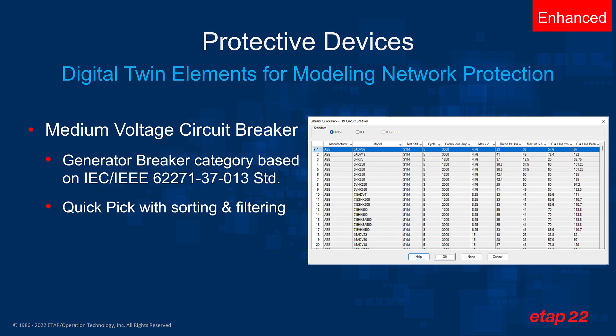The library now complies with IEC IEEE 62271, which is the standard for high voltage switchgear and control gear for alternating current generator circuit breakers. You can essentially choose from ANSI,